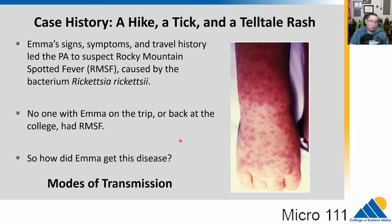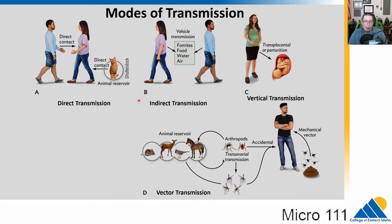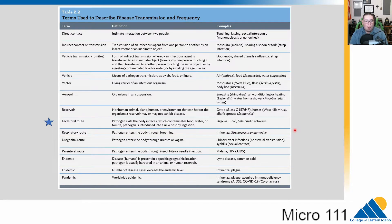Interestingly, Rocky Mountain Spotted Fever was identified in the Rocky Mountains but is actually very common on the East Coast. We're going to talk about modes of transmission. We have direct transmission, indirect transmission, vertical transmission, and vector-borne transmission, which involves an animal reservoir and arthropods — insects and arachnids — moving the bacterial agent from the reservoir into humans.